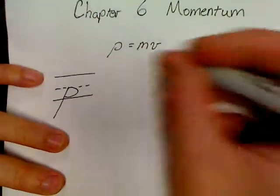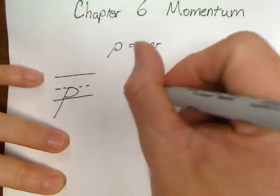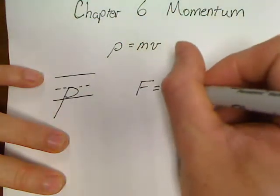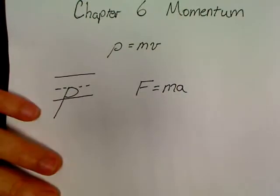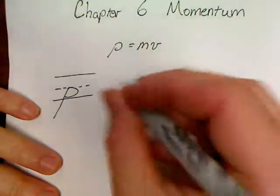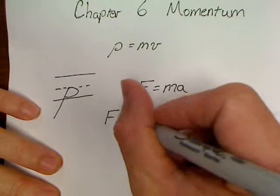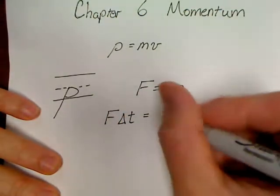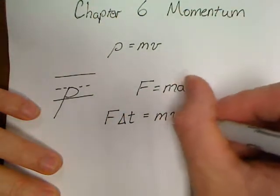This is our basic equation if something needs momentum, and we're going to take this a step further. This is actually going to Isaac Newton. We've looked at this equation umpteen times already, and that's F equals MA. Isaac Newton really wrote this equation first. He called it the impulse equation.